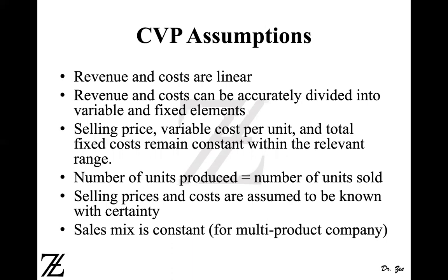The second assumption is that revenue and cost can be accurately divided into variable and fixed elements, meaning that when you analyze the accounts, you should be able to clearly distinguish what is variable and what is fixed. If you are unable to separate them out, you won't be able to perform a cost volume profit analysis or draw an accurate CVP graph — it won't be a true depiction of what's happening in the company.